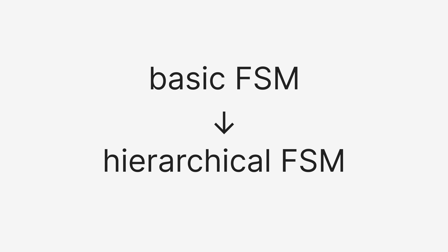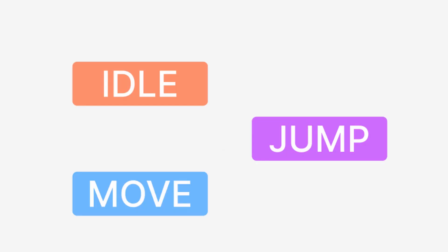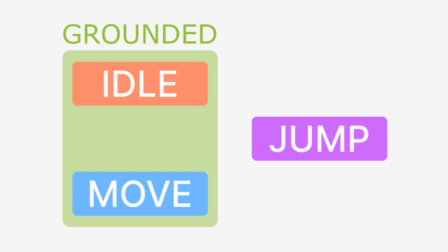The way we're going to add this jumping state is by turning our basic FSM into a hierarchical FSM. Hierarchical FSMs are a way of grouping together several states that are similar in terms of either inputs or update logic, so that one input can be used in several states without repeating your code. We're going to have a general grounded state that is valid both for idle and moving, making them substates of the grounded state, so we can transition from either idle or moving to jumping.